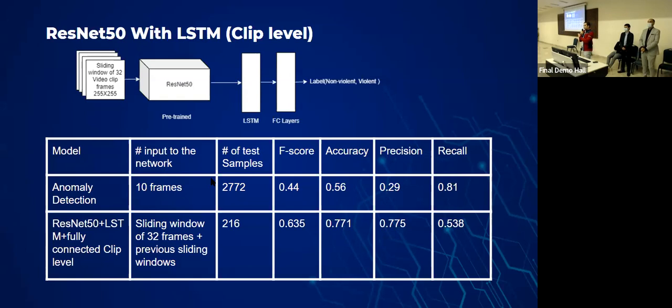The number of test samples you see here is the number of the testing clips in our dataset. It's not like the previous models where this number of test samples was the number of frames. As you can see, the accuracy is a little bit lower. The recall is also a little bit lower.